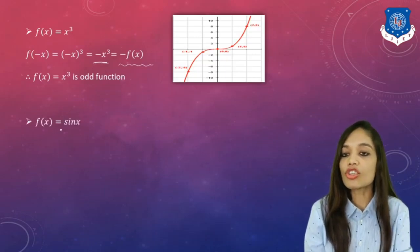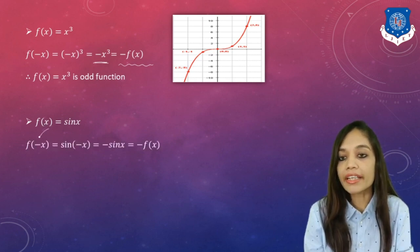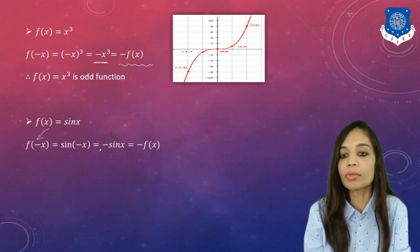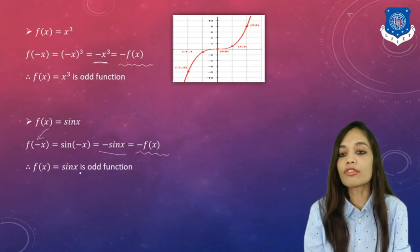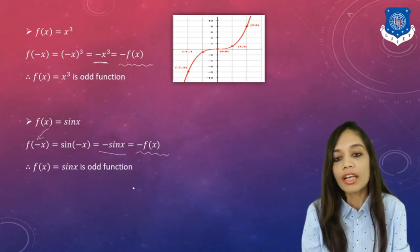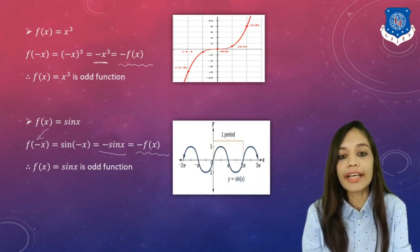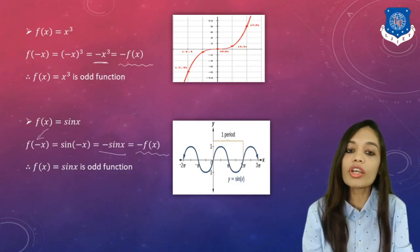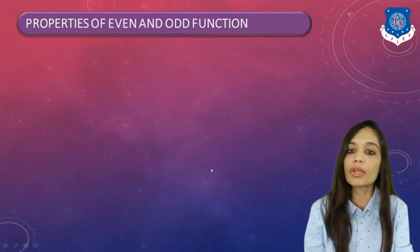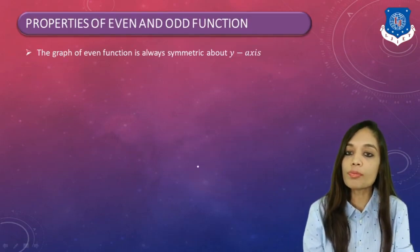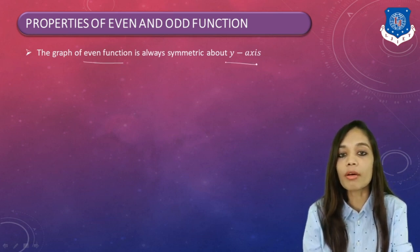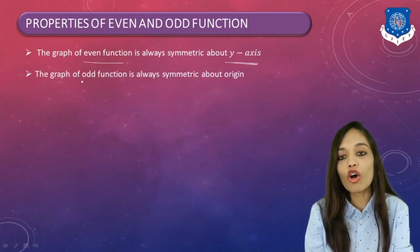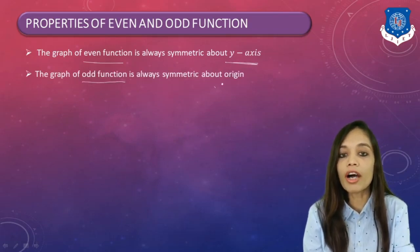One more example: f(x) = sin x. Replacing x by −x: sin(−x) = −sin x = −f(x). Hence f(x) = sin x is an odd function. Its graph is also symmetric about the origin. So to summarize the first two properties: the graph of an even function is always symmetric about the y-axis, and the graph of an odd function is always symmetric about the origin.